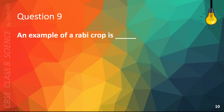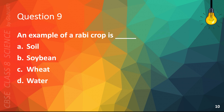Question 9. An example of a Robby crop is: A. Soil, B. Soybean, C. Wheat, or D. Water. The correct answer is C. Wheat.